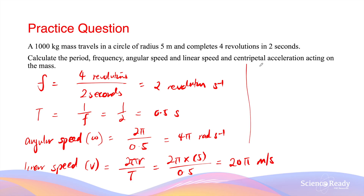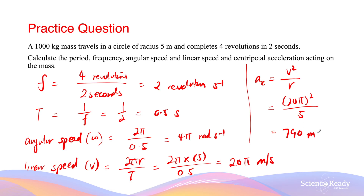The centripetal acceleration is given by v squared over r. Taking the linear velocity of 20π squared, divided by the radius of 5 metres, gives approximately 790 metres per second squared. The direction of this acceleration is towards the centre of the circle, since centripetal acceleration means centre-seeking acceleration.